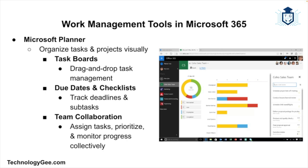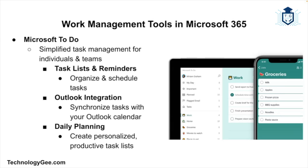Next, we have Microsoft Planner, a work management tool for organizing tasks, projects, and team activities. It features task boards where you can visualize tasks with drag-and-drop boards, due dates and checklists to keep projects on track, and team collaboration to assign tasks, set priorities, and track progress in a shared space. We also have Microsoft To Do — a simple yet powerful task management app. It offers task lists and reminders, integration with Outlook to synchronize tasks with your calendar, and daily planning to create personalized task lists.